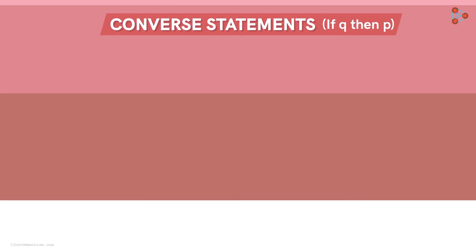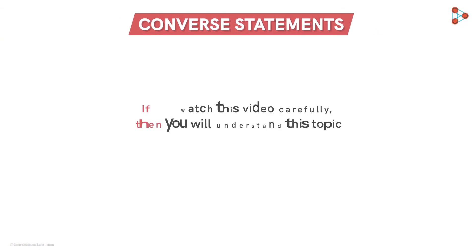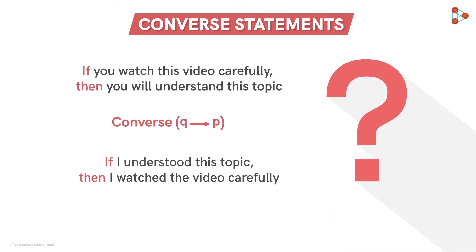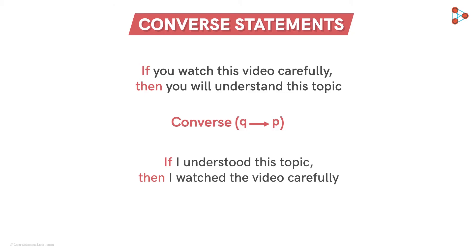Consider the first example again: If you watch this video carefully, then you will understand this topic. Now what would Q implies P, or the converse for this statement be? Yes, the converse would be if I understood this topic, then I watched the video carefully. But is this true? I am afraid not. And why do I say so? Let us understand.